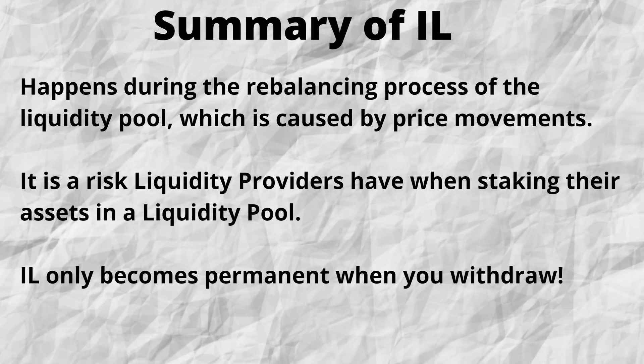So let's sum it all up. Impermanent loss, or in simple speak, not yet a permanent loss, happens during the rebalancing process of a liquidity pool, which is caused by price movements. It is a risk liquidity providers have when staking their assets in a liquidity pool. The more the price moves — the more the liquidity pool becomes out of balance — the more impermanent loss becomes an issue. And impermanent loss only becomes permanent when you withdraw. Whatever you decide to do, I hope you have a better understanding now of impermanent loss.